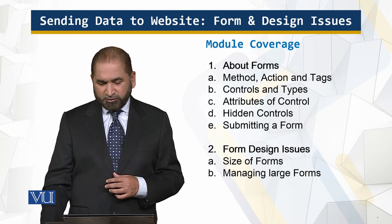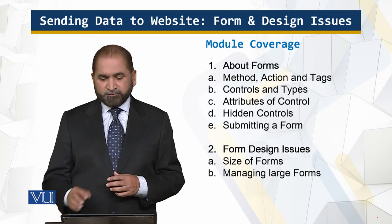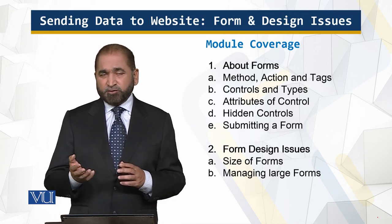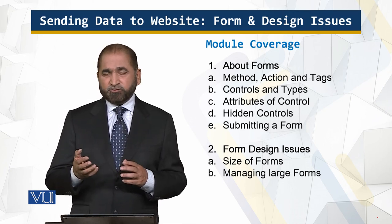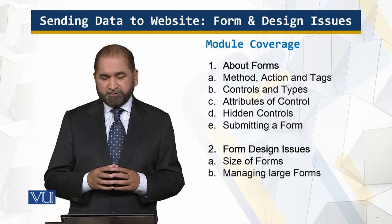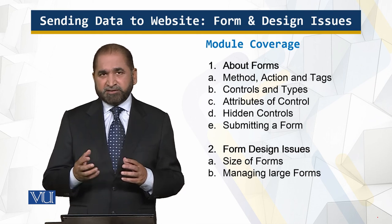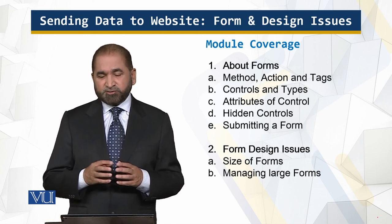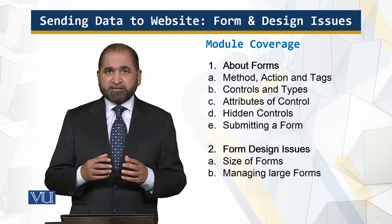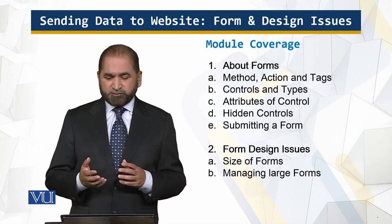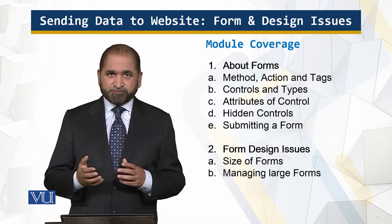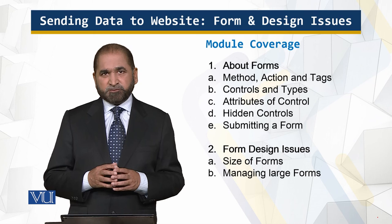Let's go into the outline of this module. The outline is about the forms. A form is a container of controls, and it consists of the method, the action, the tags, the different types of controls, and the attributes of controls — all of which we'll be discussing in this module.